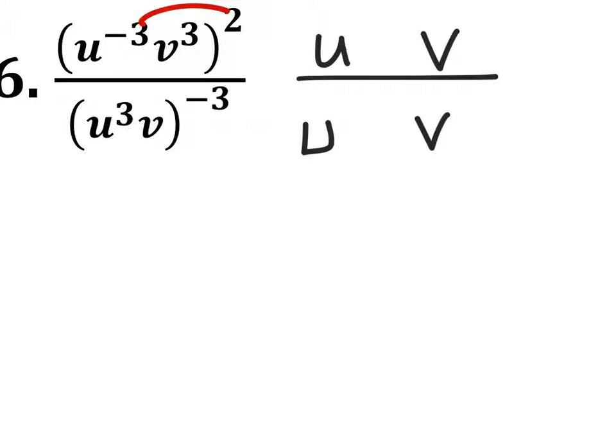So 2 times the negative 3 would be negative 6. 2 times this 3 would be v to the power of 6.